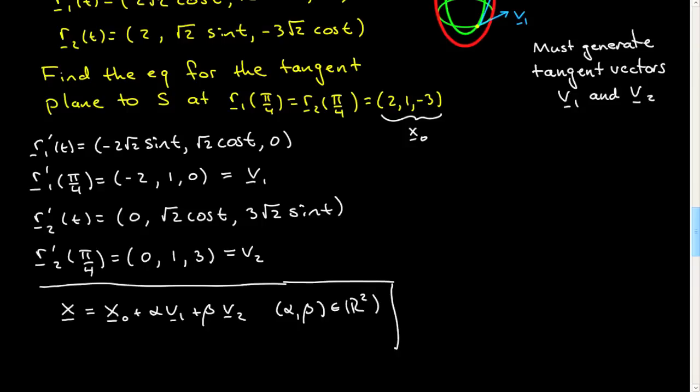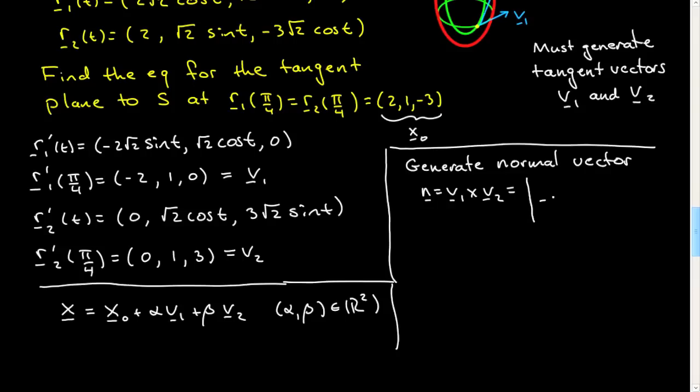What you want to do instead, once you've constructed V1 and V2, is you want to generate a normal vector. In fact, the algebra will be even easier. Generate normal vector n = V1 × V2, and then we will have reduced it to the previous example in the previous screencast.